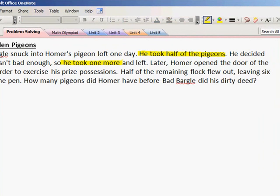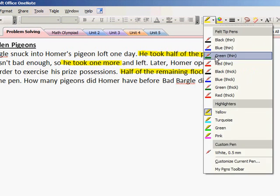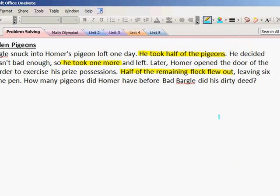As we continue to read, we found out that he took one more. And then later in our story, Homer opened the door, and half of the remaining flock flew out. You will notice, though, in these types of problems, we often find a remaining amount or an answer. And here, we know that there are six pigeons left.